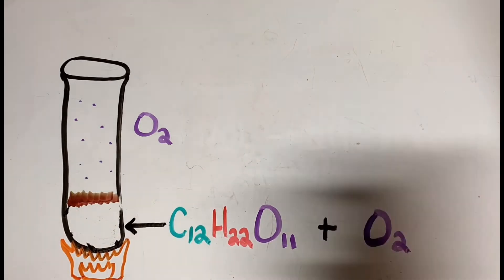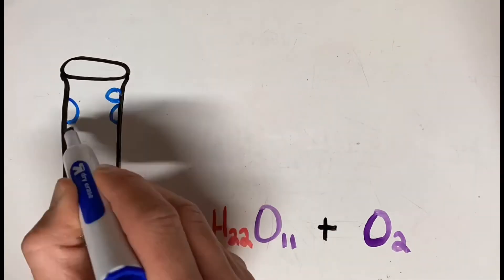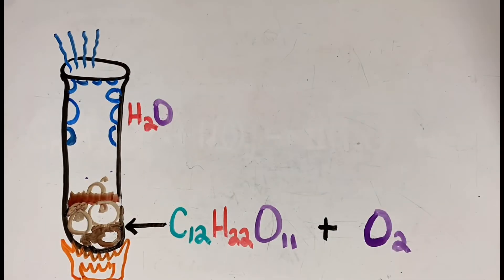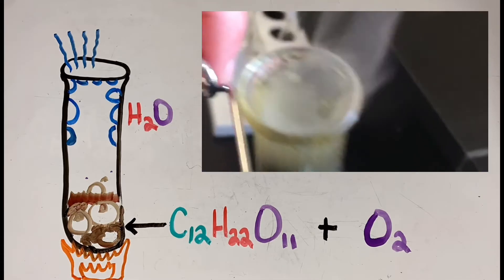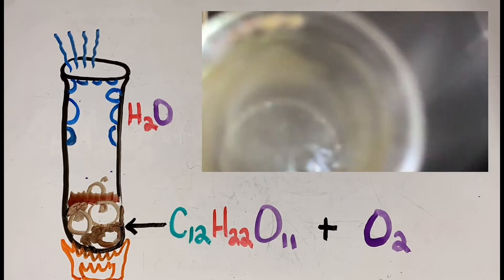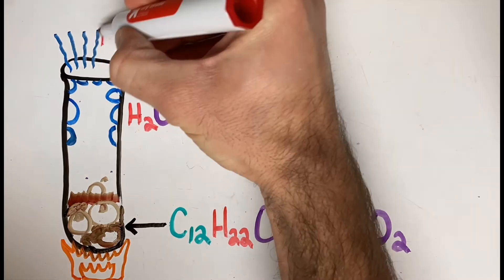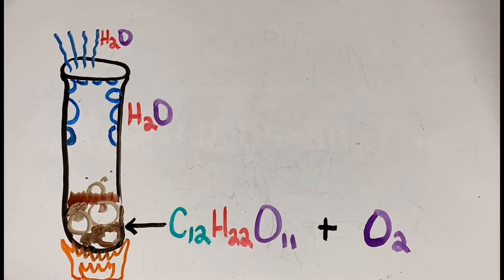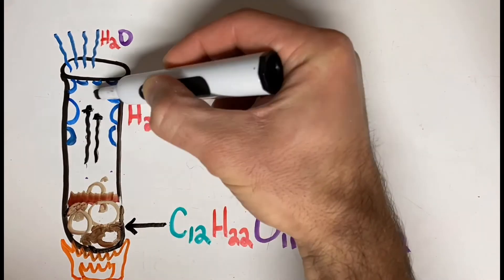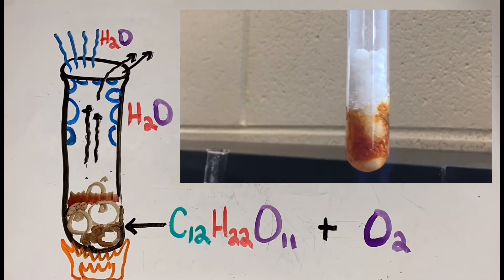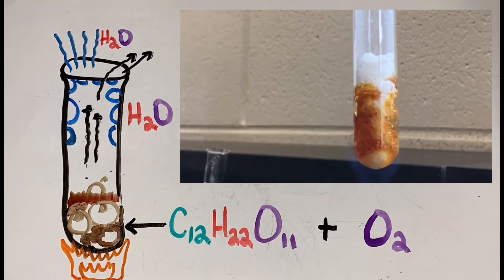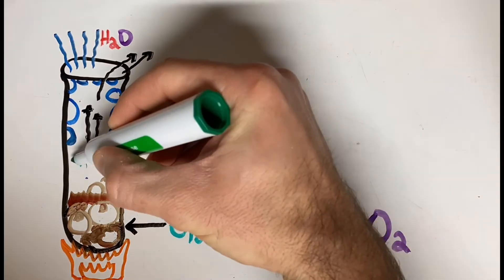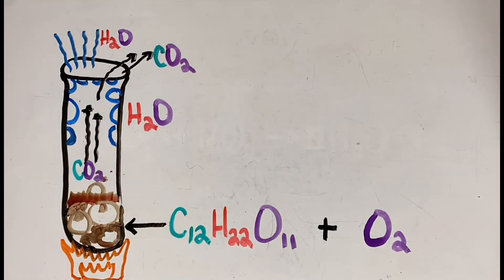Over time, what we saw was droplets forming on the edge of the test tube and steam emitting from the top. This is your water — water vapor mostly. Some of that water vapor condenses on the sides of the test tube as it travels upward and turns into steam, but then it quickly evaporates into the atmosphere as water vapor. Water vapor is just vaporized water — water in gas form. We can't see it, but it's there in the atmosphere. The other gas produced, which was in the bubbles popping and crackling as we burned the sugar, is carbon dioxide, or CO2 — one carbon and two oxygen atoms.